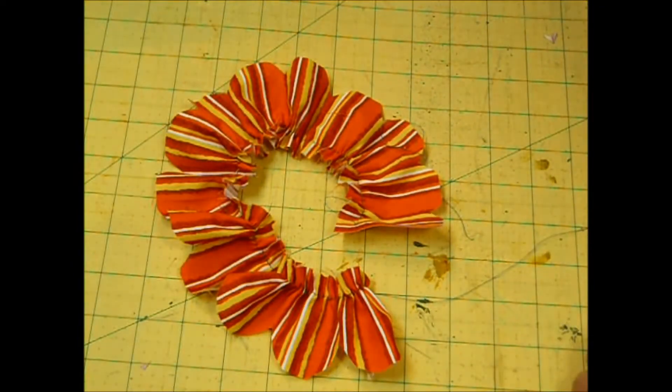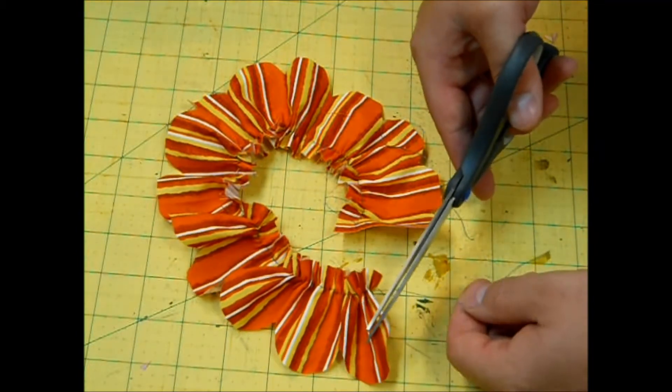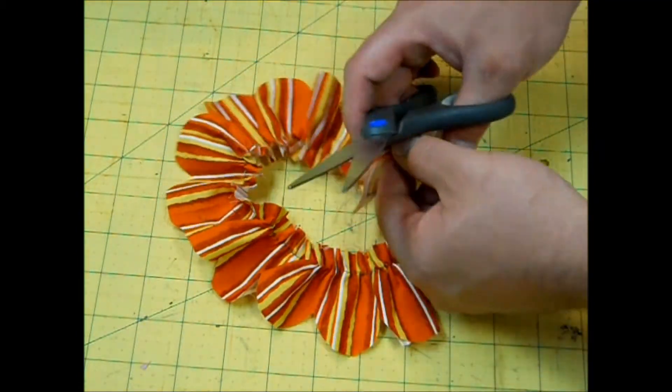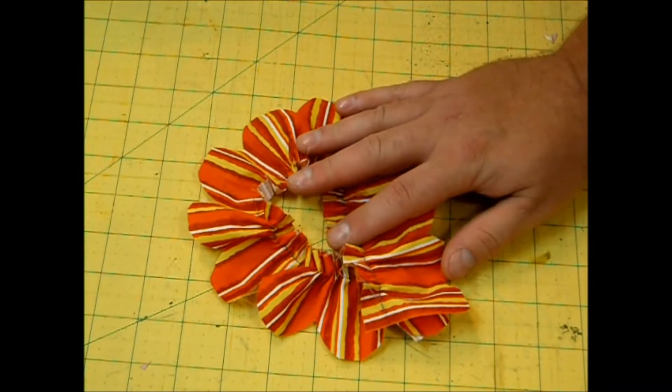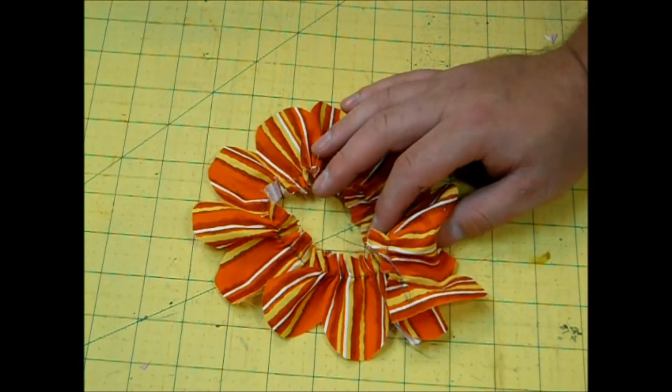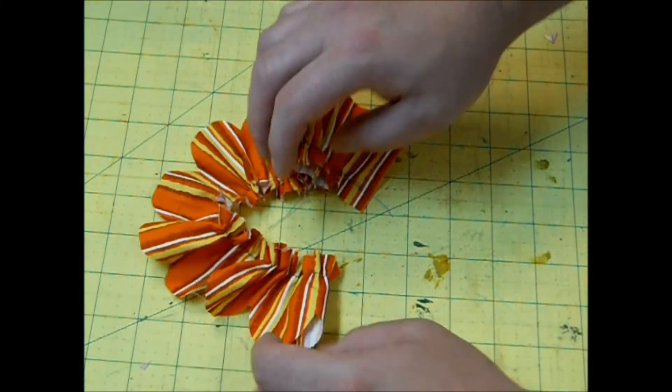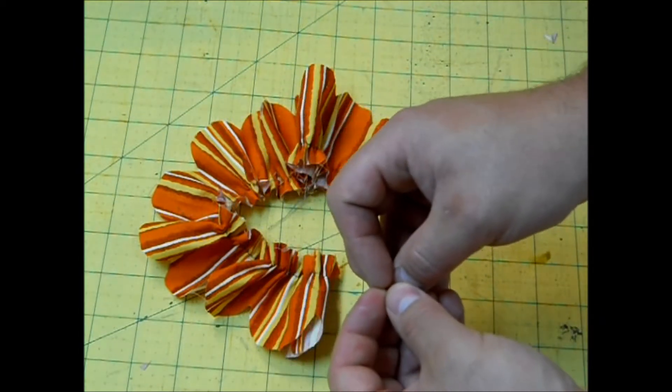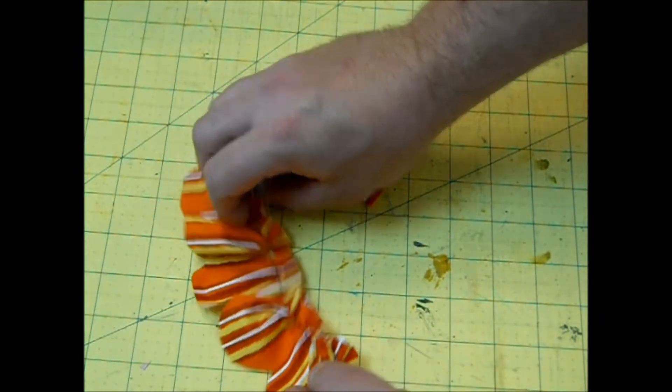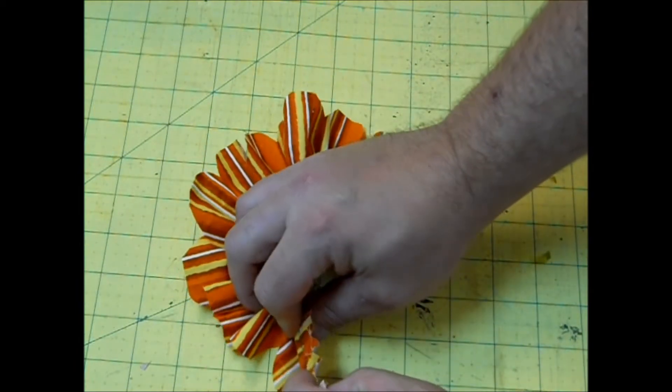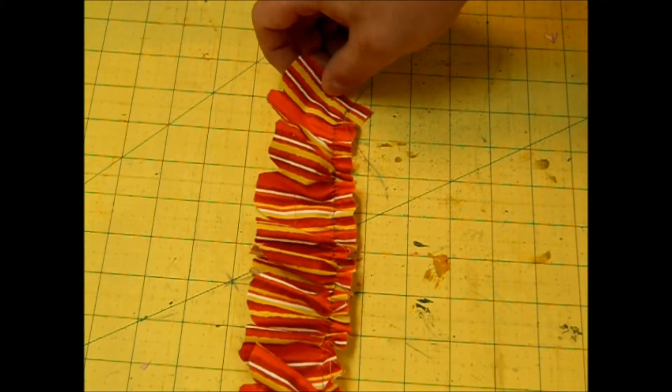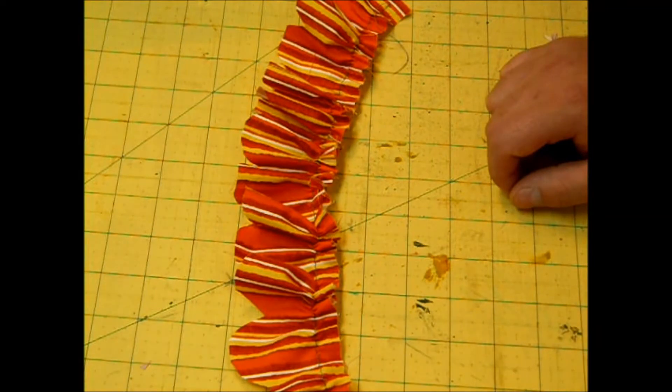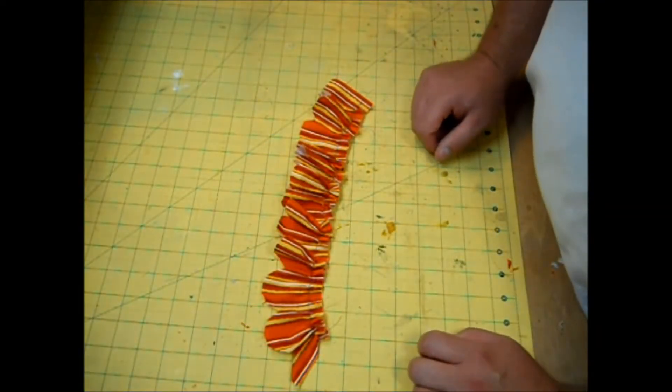Now it should look something like this. At this point, I just like to trim some of this extra thread away. How much you gather this will determine the shape of your flower. If you gather it a whole bunch, you'll have a tight little rosebud. I like it somewhere in the middle, so I don't want it that gathered. This started at about 24 inch length, so now I've gathered it down to about 13. For me, that's a perfect flower size. So the next thing you're going to want to do is grab one of your sticks and your hot glue gun.